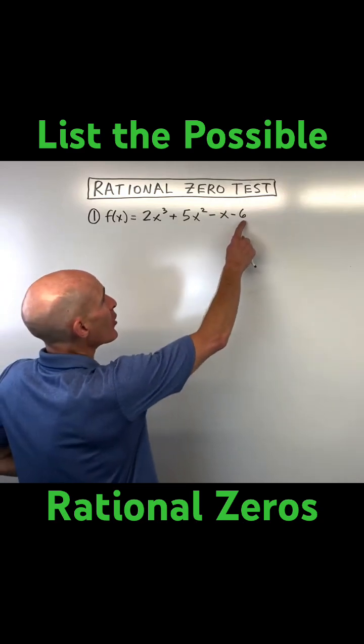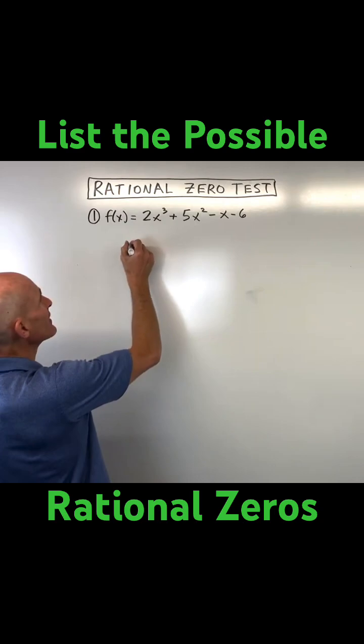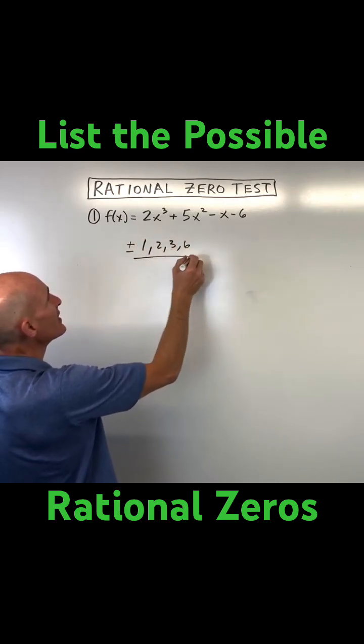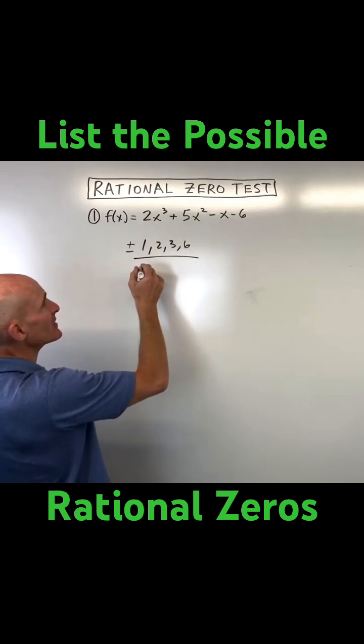So again, what you do is you think about all the numbers that go into 6. That would be like plus or minus 1, 2, 3, 6, divided by all the factors of the leading coefficient. In this case, it would be 1 or 2.